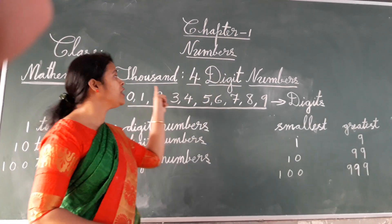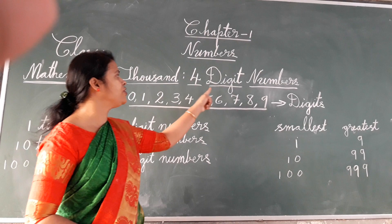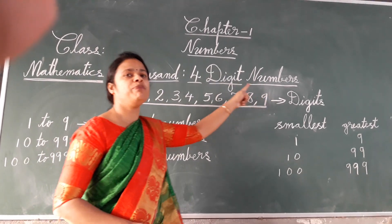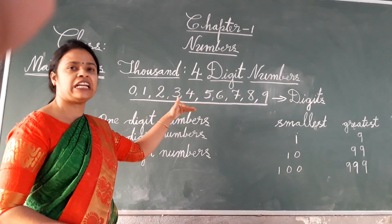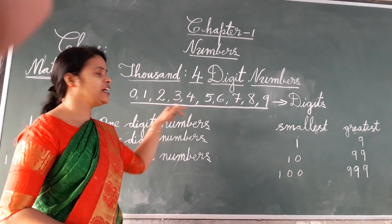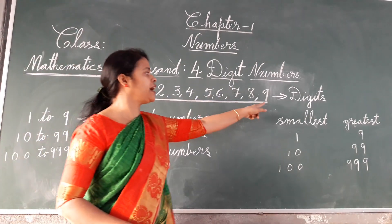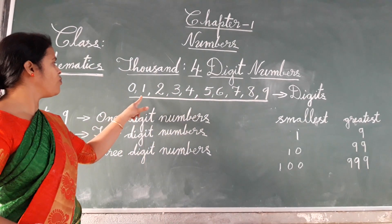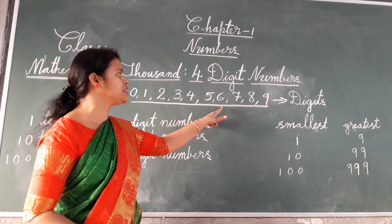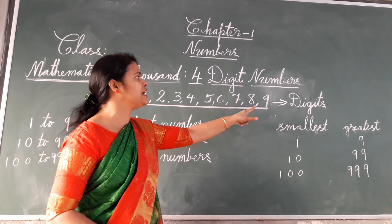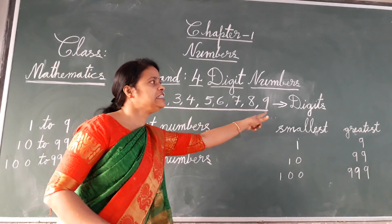The topic we are going to discuss today is thousand, four digit numbers. Before we begin four digit numbers, let's learn what a digit is. Any number from 0 to 9 — that is, 0, 1, 2, 3, 4, 5, 6, 7, 8, 9 — these numbers are called digits.